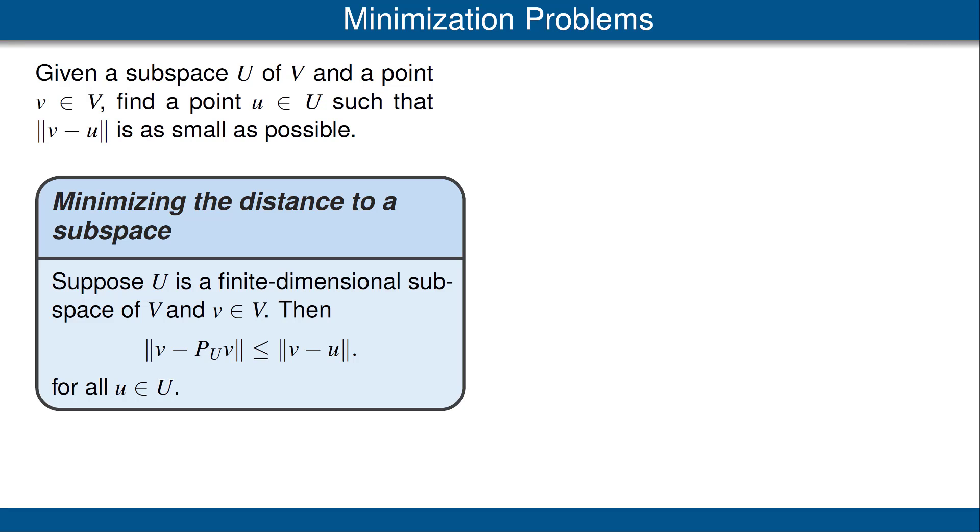Recall that P_U of v is an element of U. Thus this inequality says that the smallest norm of v minus u can be for any vector in U is obtained when we choose u to be the orthogonal projection of U applied to v.